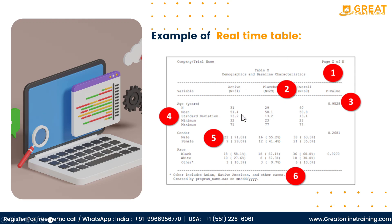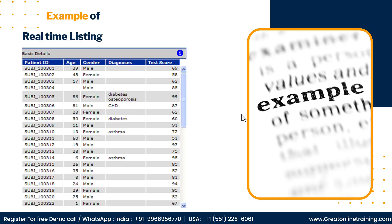A table is a summary format of data. We generate data as a programmer in real time. If you want to make a list of extra data, we will summarize the table. If you want to summarize the data, you can see it patient data-wise. For example, a patient with age 39, gender, diagnosis, and test score — like that. If you have a lot of data, you can display a listing.